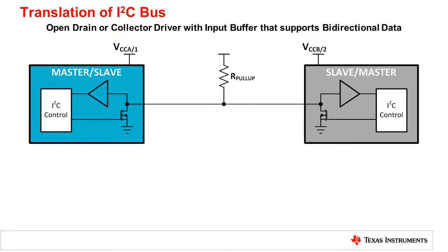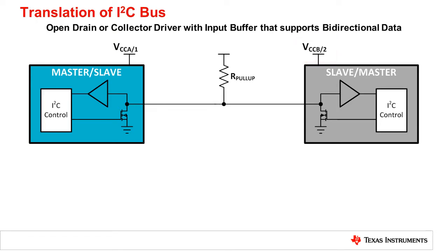In this diagram, we see the two devices have different VCC voltages, VCCA1 and VCCB2. This means that their digital logic levels are different, and we need to do translation from one voltage level to the other. It is often called a voltage level mismatch.